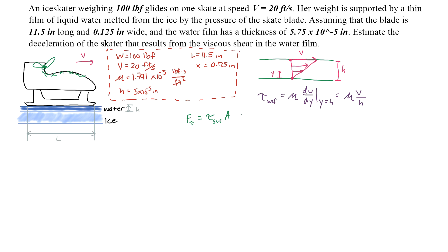The area of the bottom of the skate is the length L times the width X. So the shear force is μ times V times L times X divided by H. That is our shear force acting on the skate.